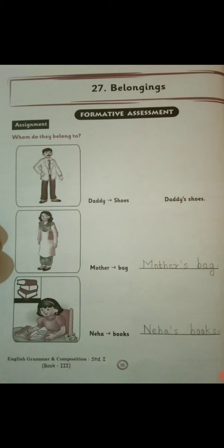Today we are going to learn lesson number 27: Belongings, from our English Grammar part. Now I am going to explain what Belongings is and what is in this lesson — 'Whom do they belong to?' It is a Formative Assessment Assignment. Now pay attention to the video carefully till the end. Let us see lesson 27, Belongings.